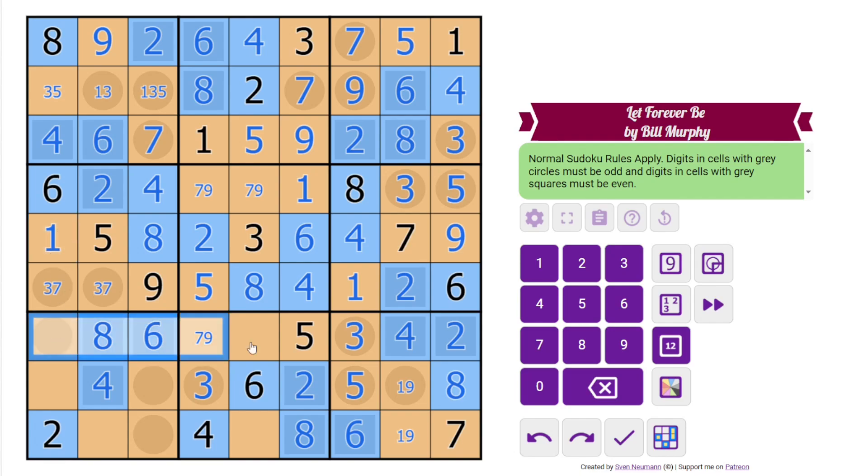This can't be 1 in this row, so the only place for 1 is there. It means this is 7 or 9, but there's a 7 there, and that is going to finish it off.